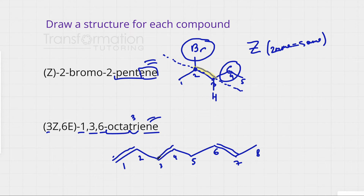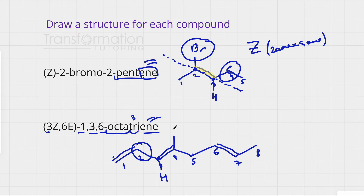Let's check double bond three-four first. On carbon three, it's attached to carbon two, but a hydrogen is missing — I draw it in. Carbon is bigger than hydrogen, so I circle carbon. On carbon four, a hydrogen is also missing. Again, carbon is bigger than hydrogen, so I circle carbon. These two circled groups are on opposite sides of the double bond, which means this configuration is E, not Z.